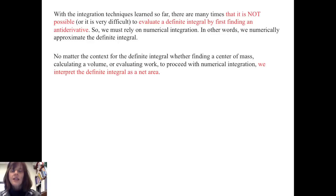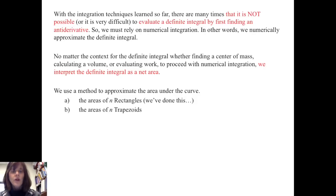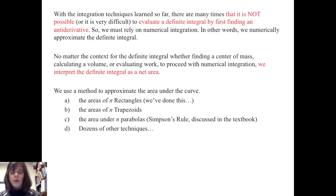In other words, we numerically approximate the definite integral. No matter the context for the definite integral — whether finding a center of mass, calculating a volume, or evaluating work — to proceed with numerical integration, we interpret the definite integral as a net area. We use a method to approximate the area under the curve. We've seen this before using the areas of n rectangles. We can also use the areas of n trapezoids, or we can use the area under n parabolas, which is Simpson's rule. And there are dozens of other techniques.